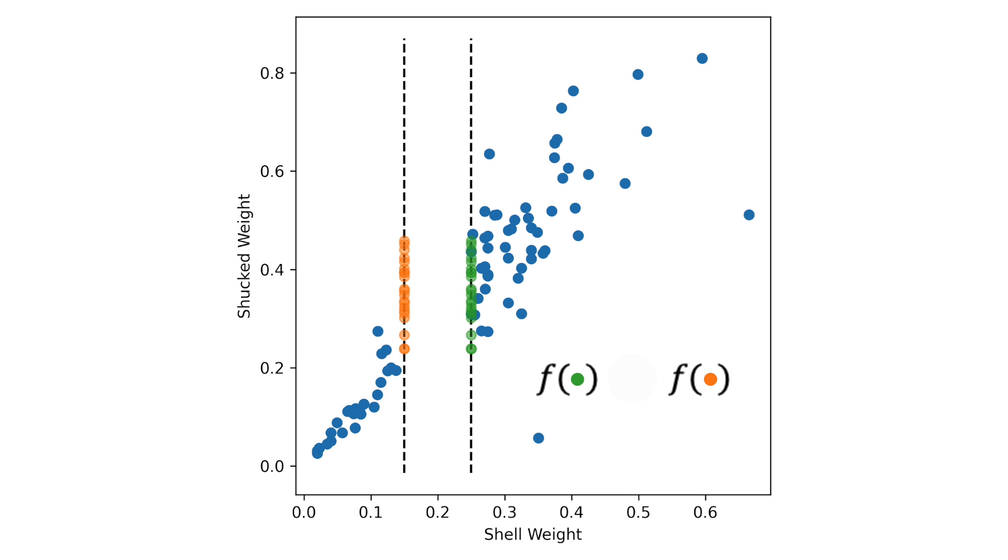The next step is to get the black box model prediction for both samples in the sample pair. We then subtract the prediction for the first sample from the second. We do this for all sample pairs and calculate the average. This gives us an estimate of the effect on the prediction due to the change in shell weight within this interval.